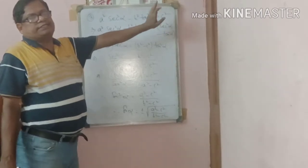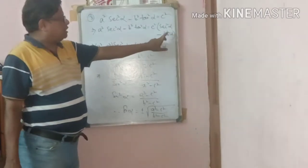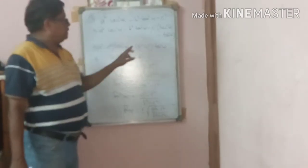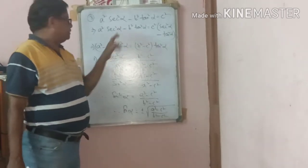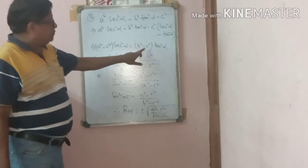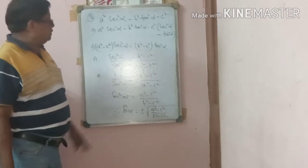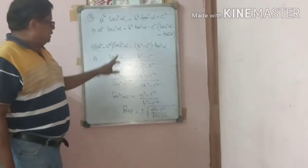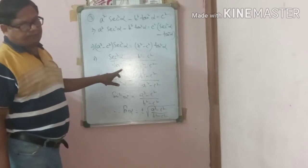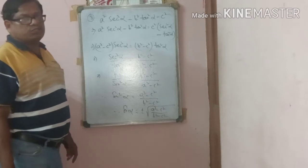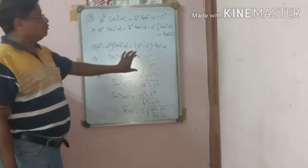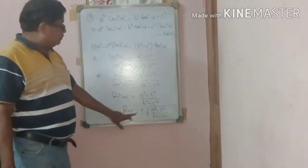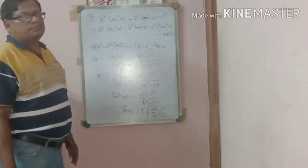To verify: c² = c²·1 = c²(sec²α − tan²α). Distribute: c²·sec²α − c²·tan²α. Move c²·sec²α to the left: (a² − c²)·sec²α = (b² − c²)·tan²α. So sec²α / tan²α = (b² − c²) / (a² − c²). Since sec²α / tan²α = 1/sin²α, we have sin²α = (a² − c²)/(b² − c²), so sinα = ±√[(a² − c²)/(b² − c²)].